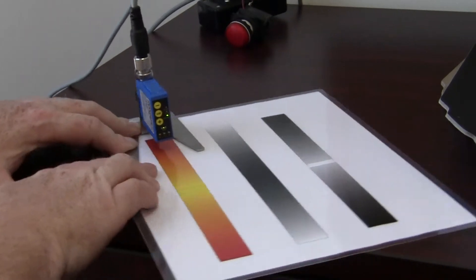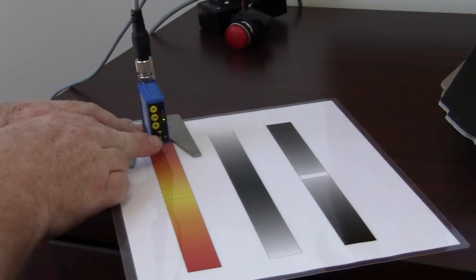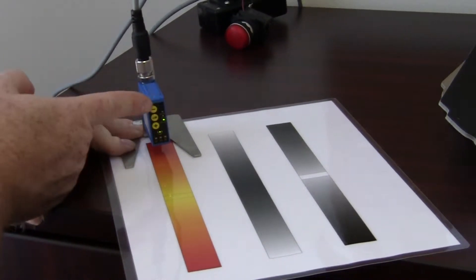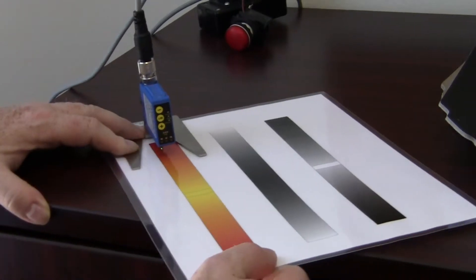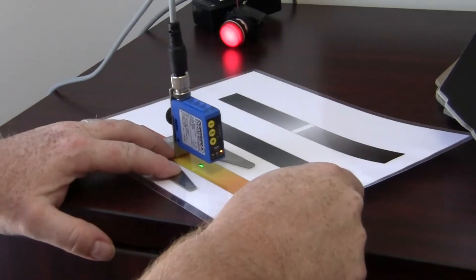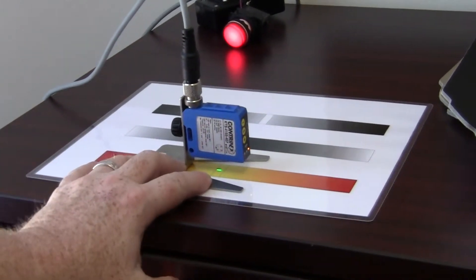Then you will see that it has selected the tolerance level. You're going to reduce the tolerances to the minimum tolerance and hit set. Now it is set up to look for that color and that color only.